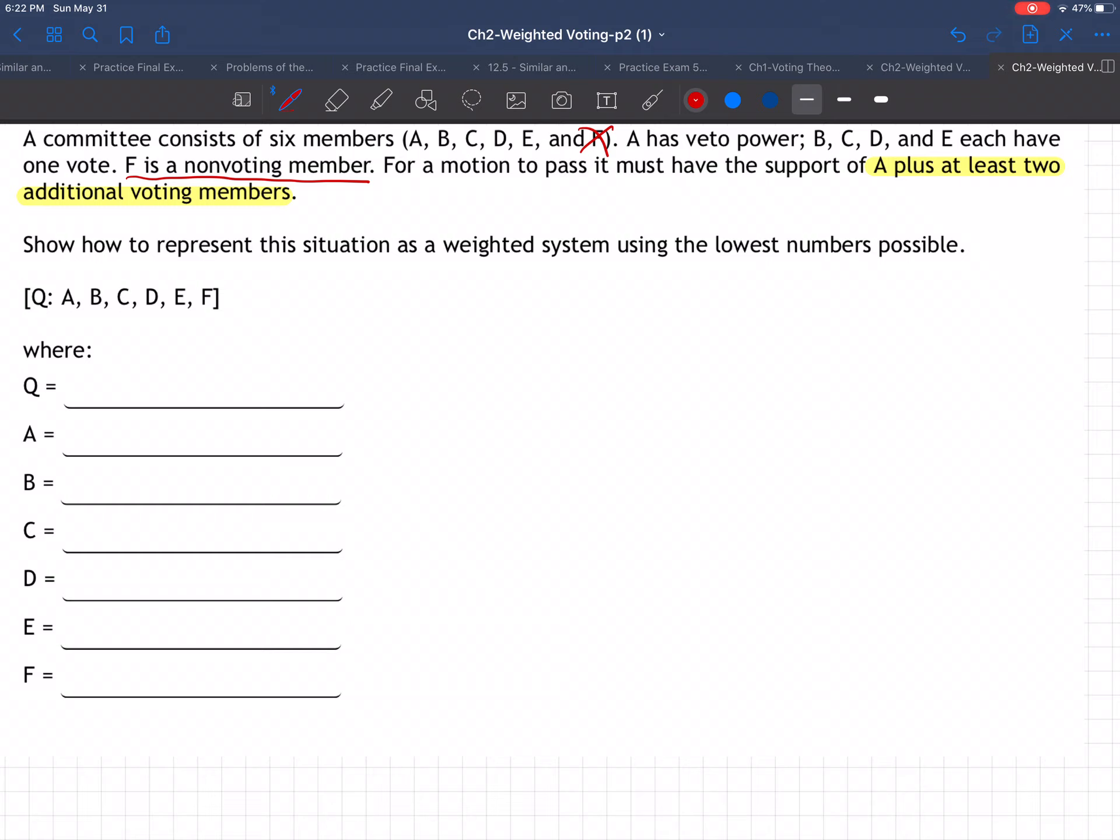So what they want us to do is show how to represent this situation as a weighted system using the lowest numbers possible. This is kind of a strange question. They basically want us to change these words and rules to something like numbers, like maybe a quota 10 and 4, 2, 1, 2, 3, 4, whatever. I'm just making stuff up here.